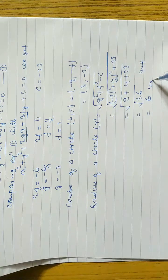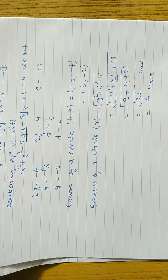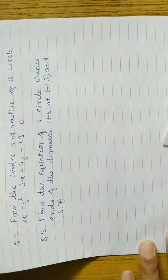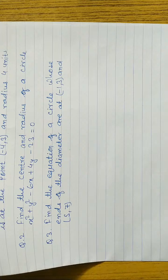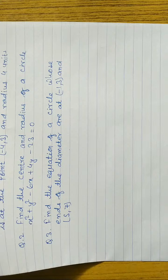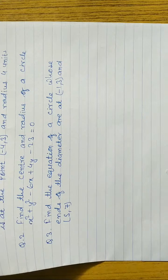Now look at question number 3. Find the equation of a circle whose ends of the diameter are given. We need to find the equation of a circle using the equation in the form of diameter. What is the formula for the equation of a circle in the form of diameter? Let's work it out.